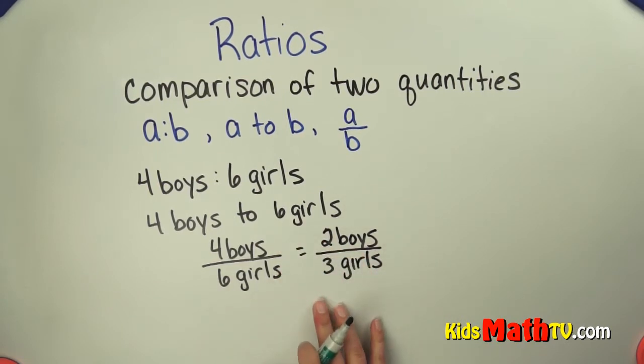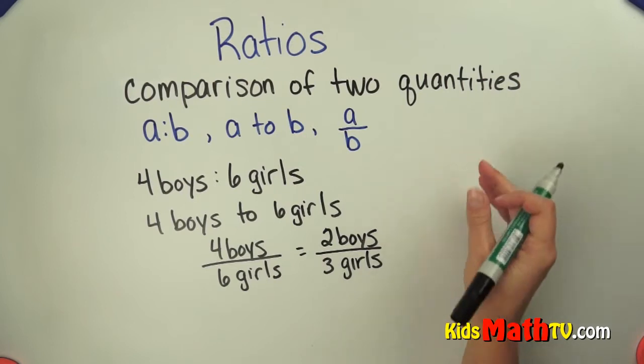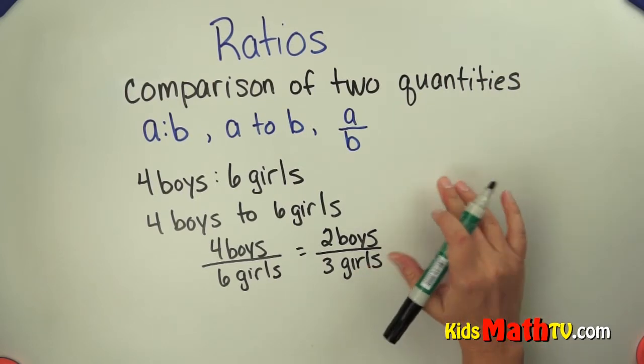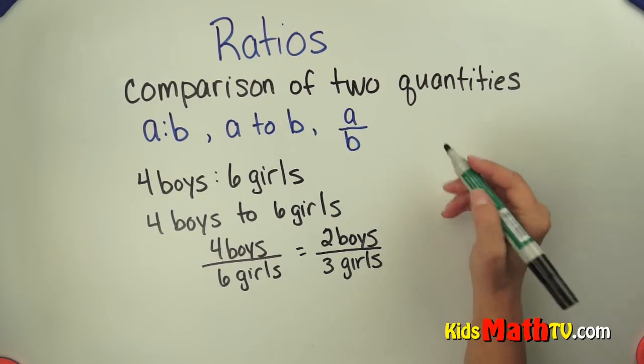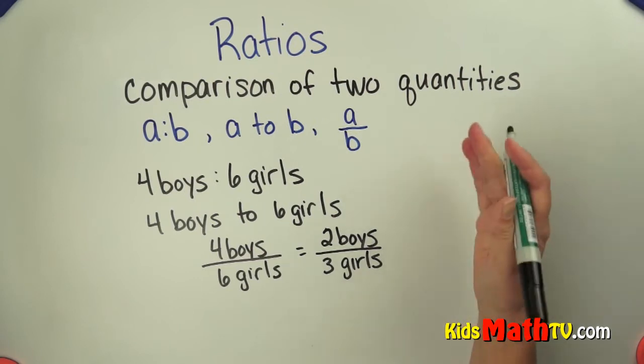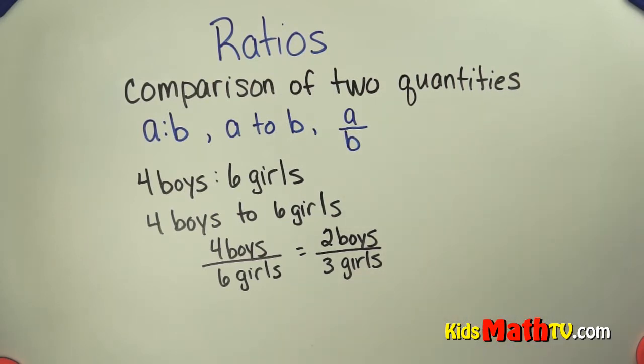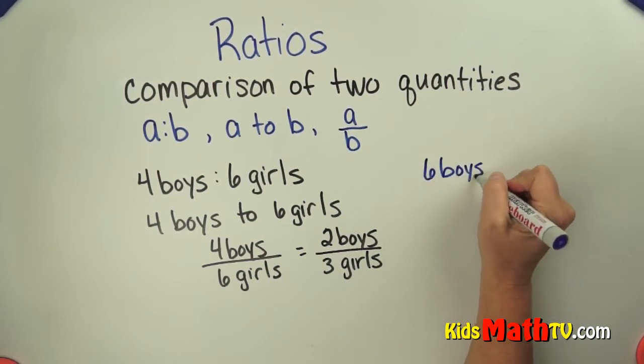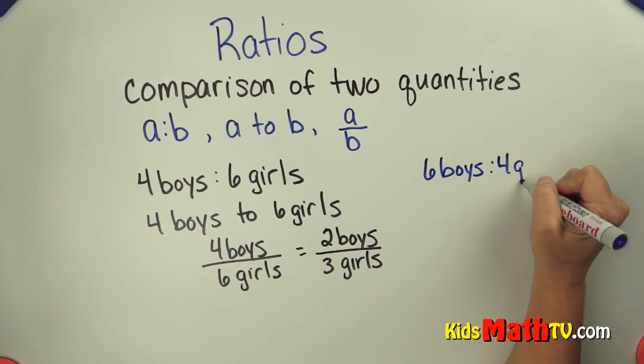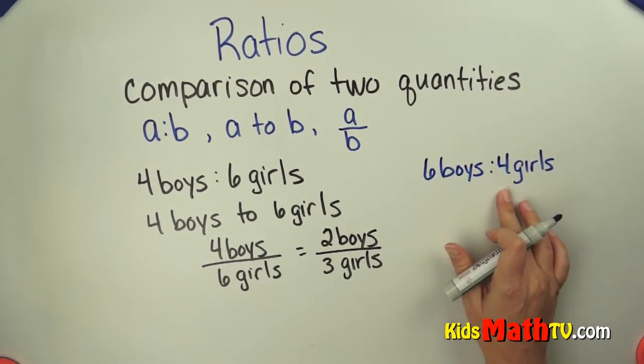This is a different ratio than if we were to compare the girls to the boys. It's not four to six when we do the girls to the boys. It would actually be the opposite. So it would actually be six girls to four boys. The order matters in ratios.